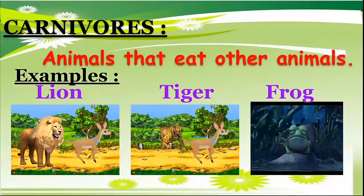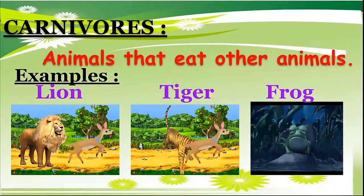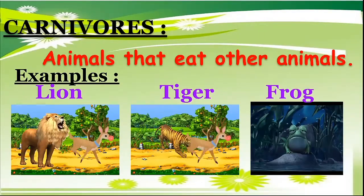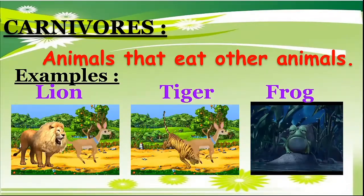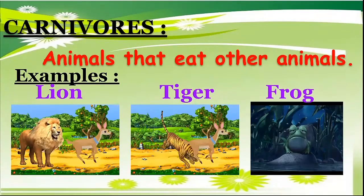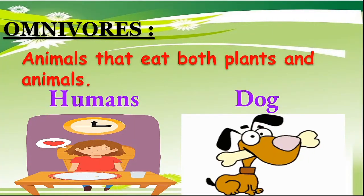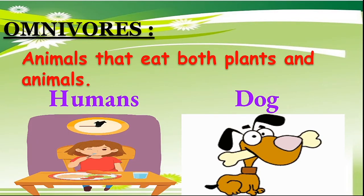Next, carnivores. Animals that eat other animals are called carnivores. For example: lion, tiger and frog. Next, omnivores. Animals that eat both plants and animals are called omnivores. For example: humans and dog.